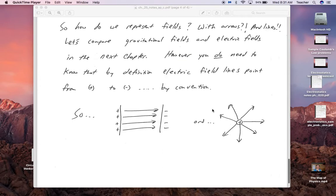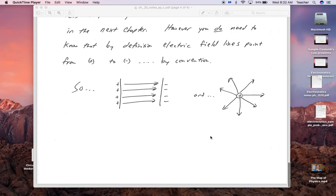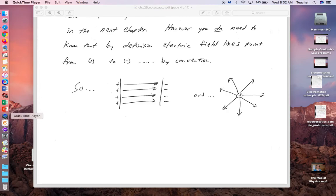So how do we represent fields with arrows and lines? Comparing gravitational fields and electric fields is in the next chapter. However, you do need to understand that by definition, electric field lines point from positive to negative. This is an example of a uniform electric field, and this is an example of a point source creating an electric field. Here it's pretty obvious that the field strength stays the same. Here it's pretty obvious the field strength gets weaker and weaker the further you get from your test charge. Hopefully that makes sense, and I'll upload it.